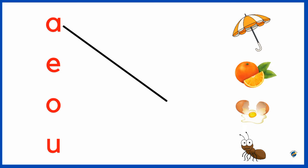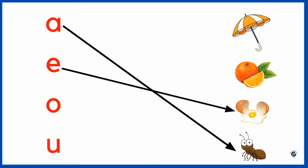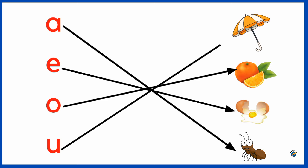A for Ant. E for Egg. O for Orange. U for Umbrella.